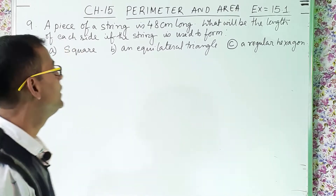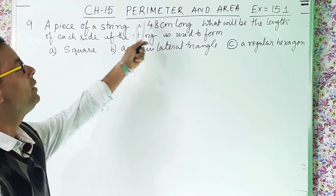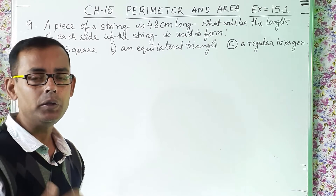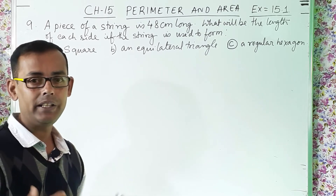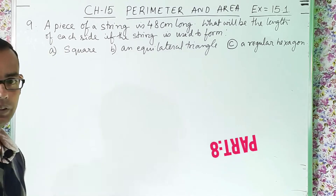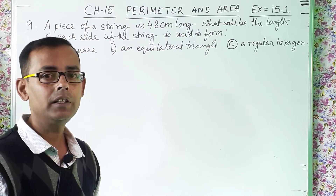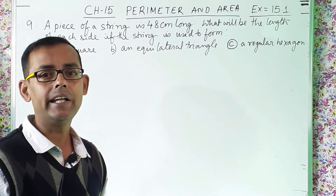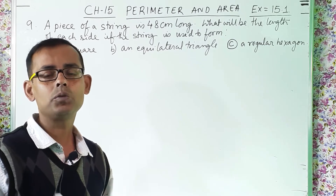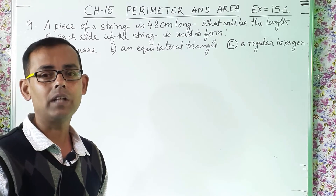Students, this is Class 6 Mathematics, Chapter 15 Perimeter and Area, Exercise 15.1. This is a continuation of this chapter — today it is Part 8 and we are going to solve question number 9. Those who have not watched the previous part, you can watch it. I have shared the link in the description below as well as in the I button. Students, try to watch the full video so you can understand the sum nicely. Don't skip.